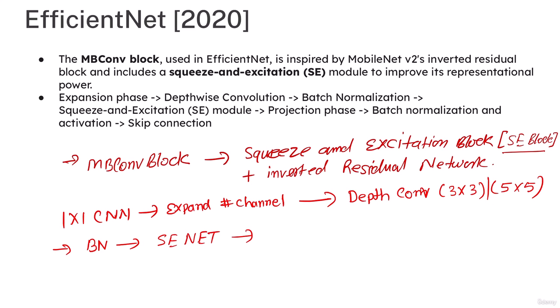After batch normalization, the SE network is used. The SE network recalibrates the channel-wise feature responses using global information. A global average pooling is used along with activation functions. After the SE module, the projection phase comes, then again batch normalization and activation, and finally skip connections and scaling.